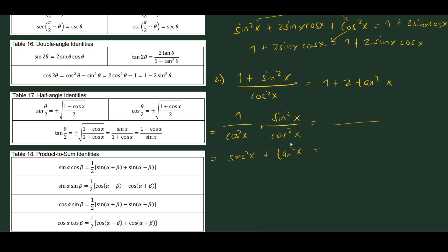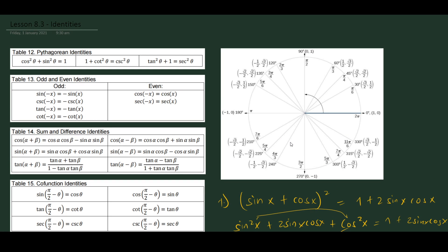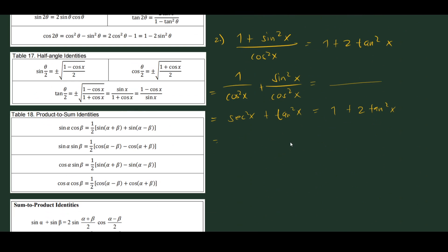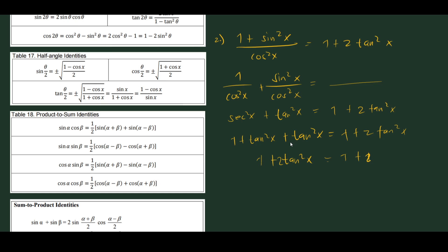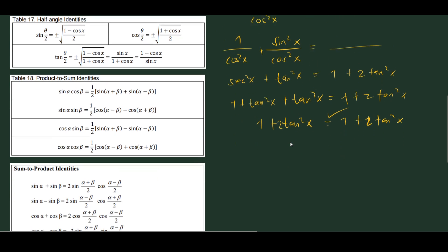This is still not equal to 1 + 2 tan²x, so we need to modify further. From the Pythagorean identities, sec²θ = tan²θ + 1. So sec²x is 1 + tan²x. Substituting, we get 1 + tan²x + tan²x, which equals 1 + 2 tan²x. They are indeed equivalent.